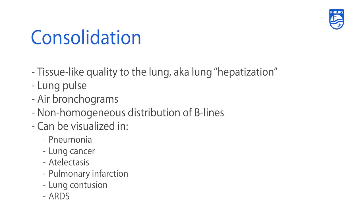When looking at a lung with lung ultrasonography and suspicious of a consolidation, it's helpful to understand that a consolidation will look almost like the lung has developed a tissue-like quality. We call this lung hepatization, where it almost looks like the lung has turned into a solid organ the way a liver or spleen looks on ultrasound. You'll also often see lung pulse and air bronchograms on consolidation, just as on a chest X-ray or CT. A non-homogeneous distribution of B-lines also clues you into possible consolidation.